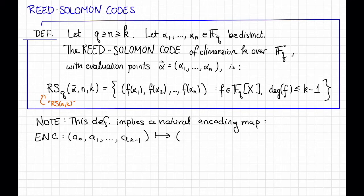and maps it into the code word F_A(α₁), F_A(α₂), dot dot dot, F_A(αₙ), where F_A(X) is the polynomial that is the sum from i equals 0 to K minus 1 of A_i X^i. There are other natural and reasonable encoding maps for Reed Solomon codes, but this is the one that we're going to think about for most of this course.